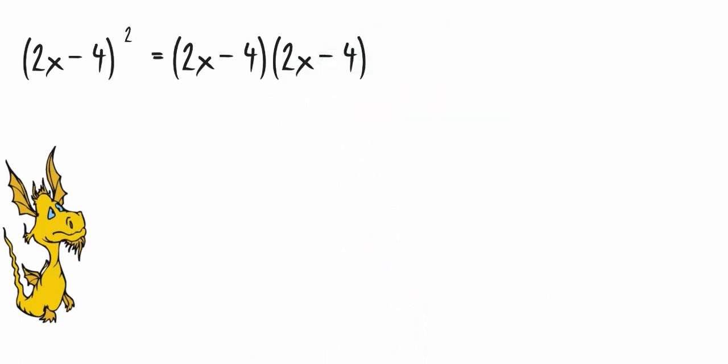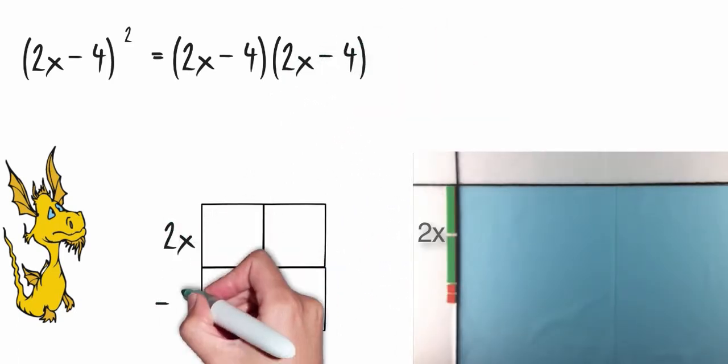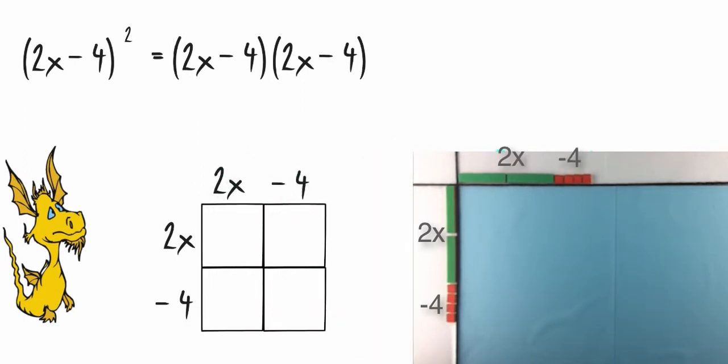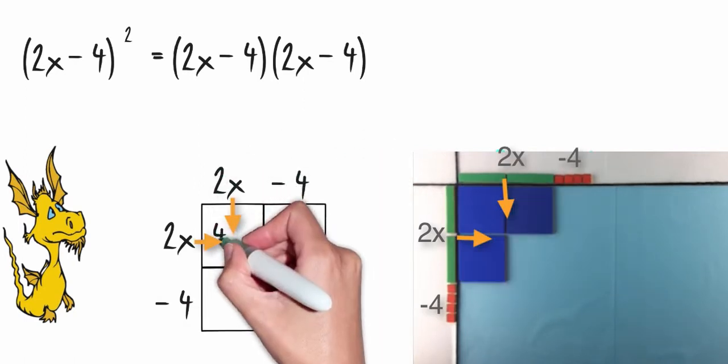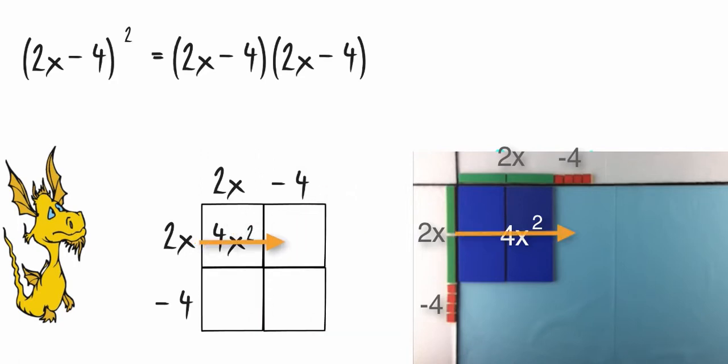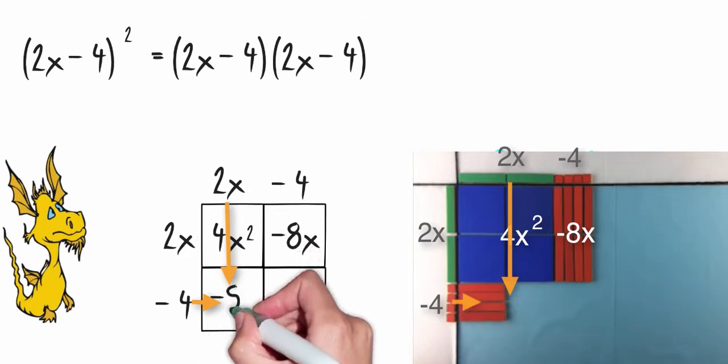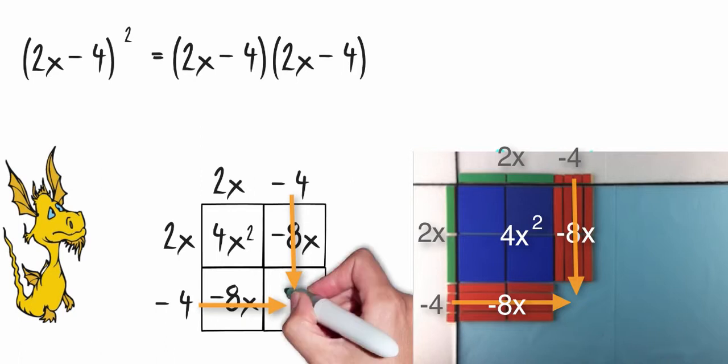I'm going to set up my multiplication array, and then I'm going to multiply out my factors. 2x times 2x is 4x squared. 2x times negative 4 is negative 8x. Negative 4 times 2x is negative 8x. And negative 4 times negative 4 is a positive 16.